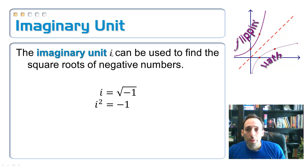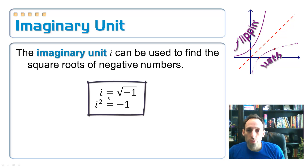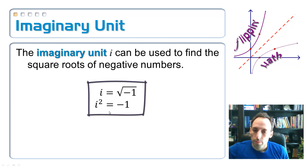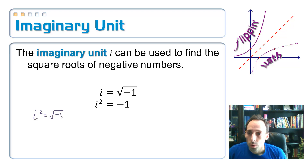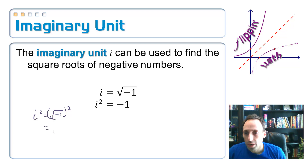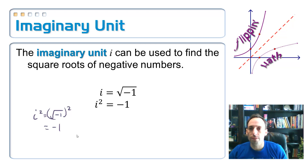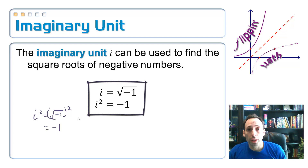We're going to define these negative square roots in terms of an imaginary unit. The imaginary unit is i, and we define it like this: i equals the square root of negative 1. If we square this, i squared equals negative 1. The square root and the square are inverses, so they cancel each other out, leaving negative 1. So here's the foundation of all complex numbers: i equals the square root of negative 1, and i squared equals negative 1.